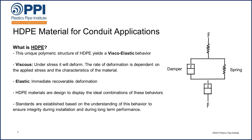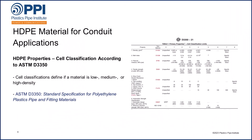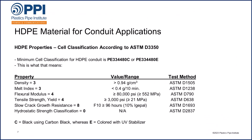For industry standards and specifications, these properties are specified according to a system known as the cell classification. The cell classification system is published in the ASTM standard D3350. This table is an excerpt from ASTM D3350. The cell classification defines whether a PE material is considered low-density, medium-density, or high-density. Today we will only talk about high-density products as used in HDPE conduit. If you have looked at HDPE conduit standards or a conduit manufacturer's specification, you may have seen the minimum cell class specified as PE334480C or PE334480E, and you may wonder what those numbers mean. Those numbers are part of the cell classification as defined in ASTM D3350, as shown below.